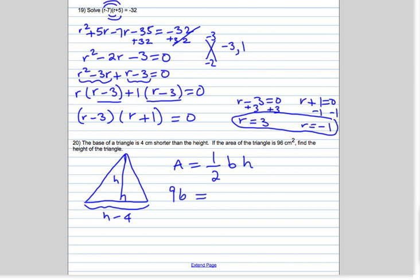The base of this triangle is h minus 4 and the height is h. Now we're going to multiply both sides by 2 to get rid of the 1 half.